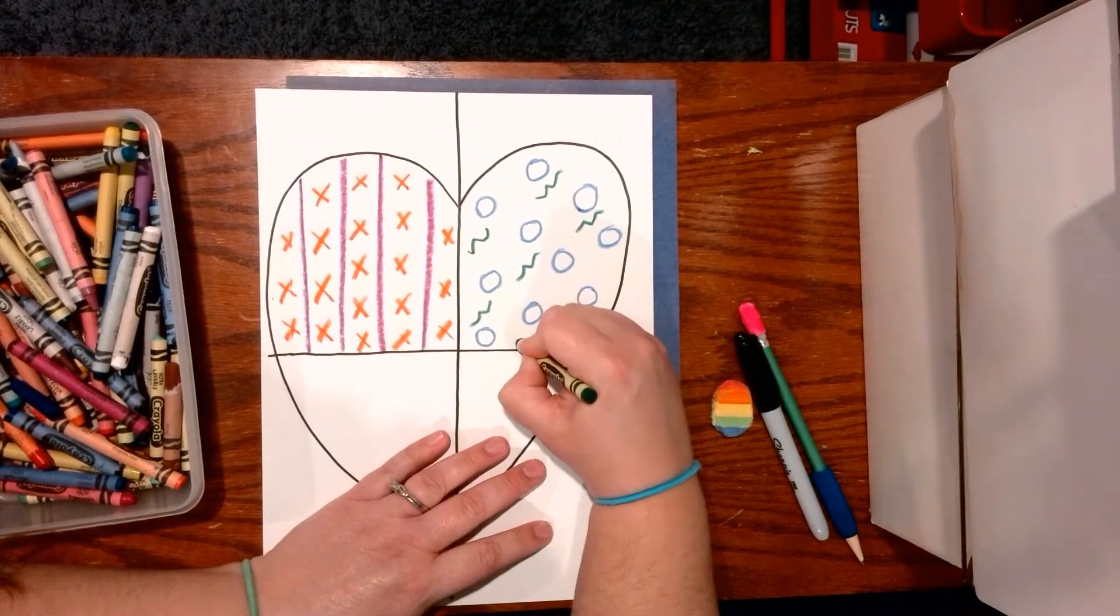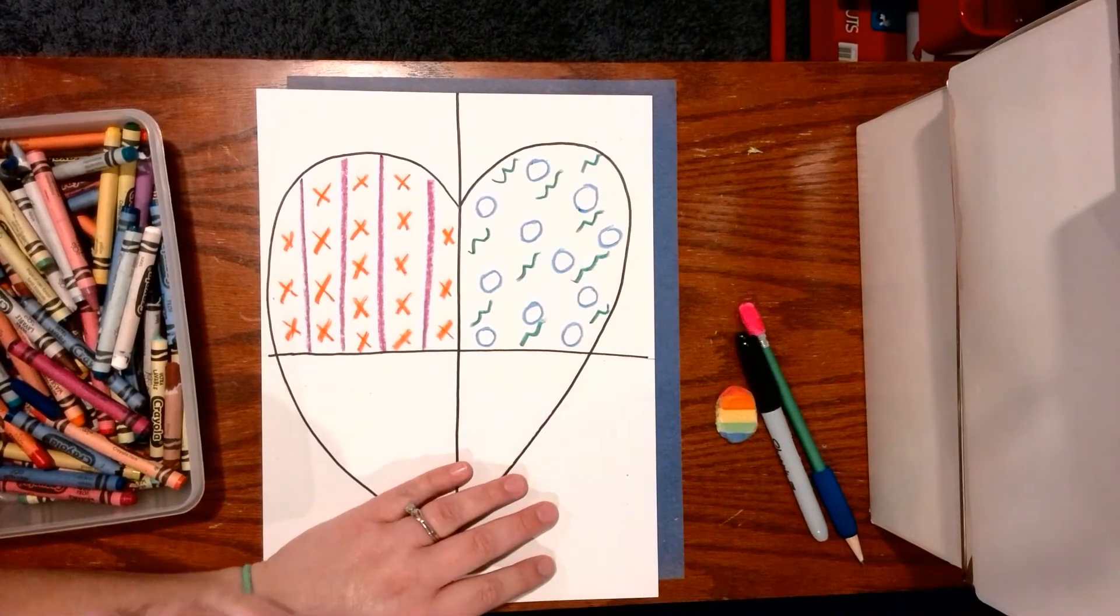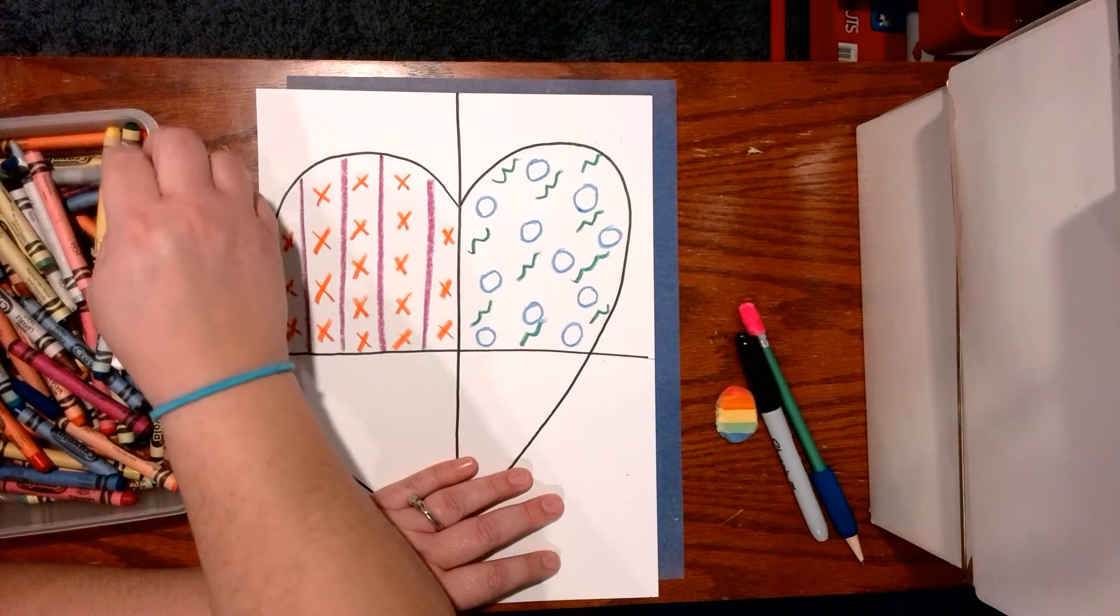Just to see. Notice how I'm not coloring in anything. I'm just basically making lines, right? Then I'm going to pick out two different colors.